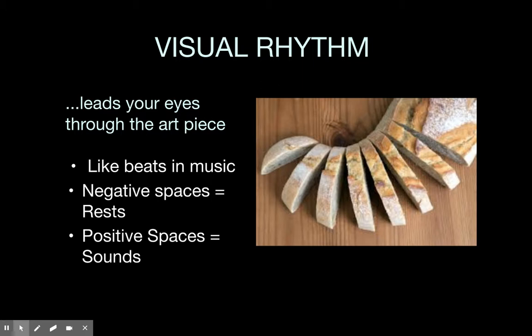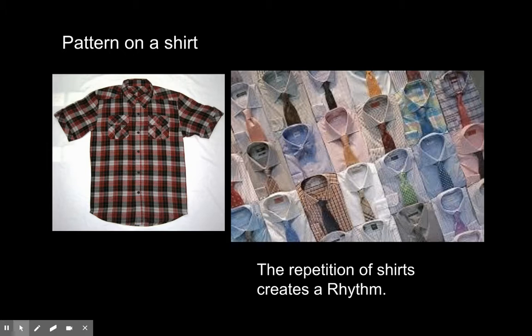Visual rhythm leads your eye through the art piece. Think about beats in music — the negative spaces are the rest, and the positive spaces are the sound or the beat. So boom, space, boom, space, boom — your eyes move through the artwork in a kind of rhythm. A good way to see the difference: a pattern is on a shirt, but a repetition of shirts creates a visual rhythm, because your eye moves from one shirt to the next.